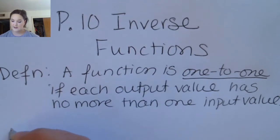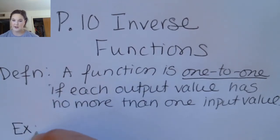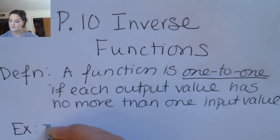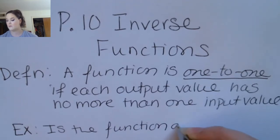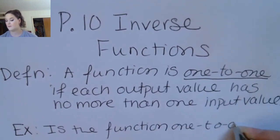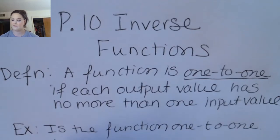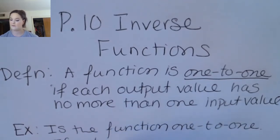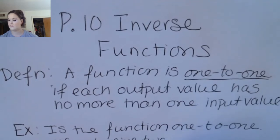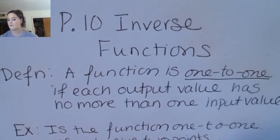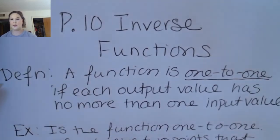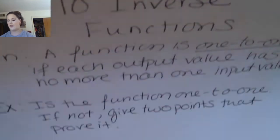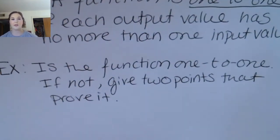So let's look at some examples of functions that might or might not be one-to-one. We're going to look at if the function is one-to-one. If it's not, we're going to give two example points that prove why the function is not one-to-one.